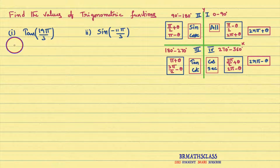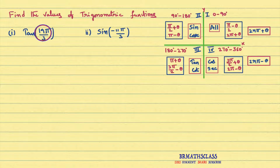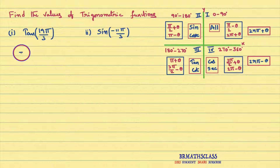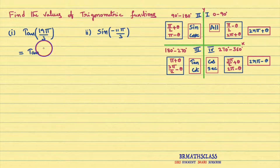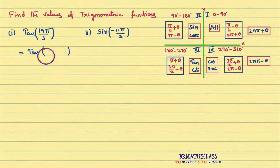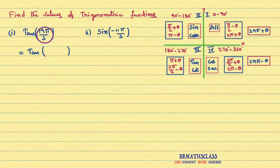First, we will find the value of tan 19π by 3. So, first you write this tan 19π by 3 like this. This is the trick. Please try to understand. This 19π by 3 — how to write it.